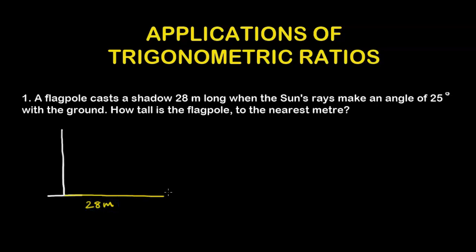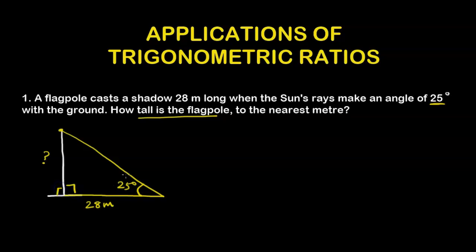The shadow is seen on the ground when the sun's rays make an angle with the ground, and that angle is 25 degrees. The question wants us to find the height of the flagpole. We apply trigonometric ratios because this is a right angle triangle — we are given an angle and a side, and we need to find an unknown side using that angle.